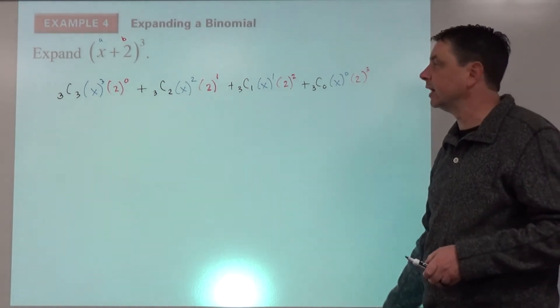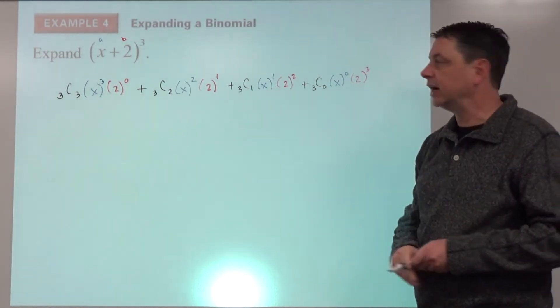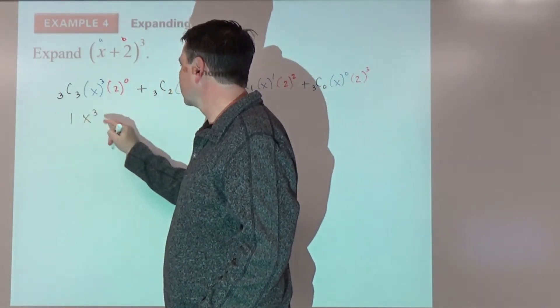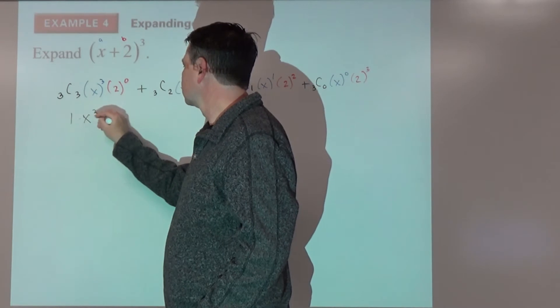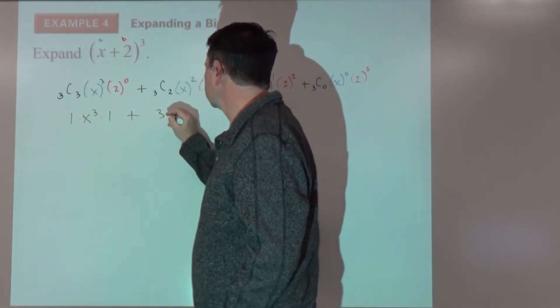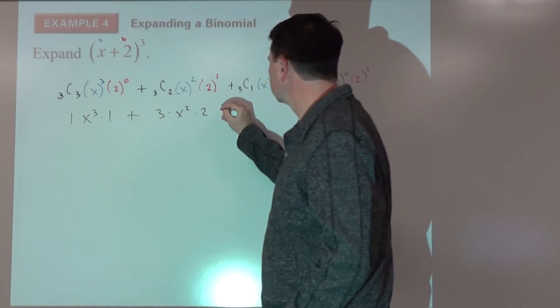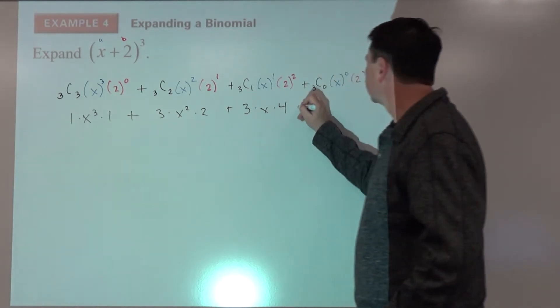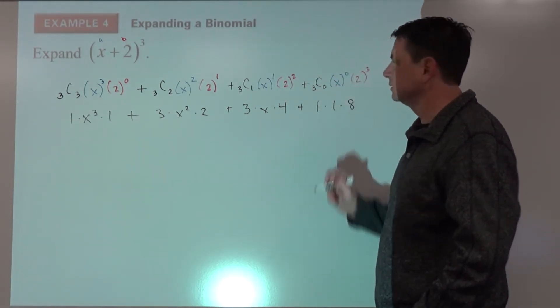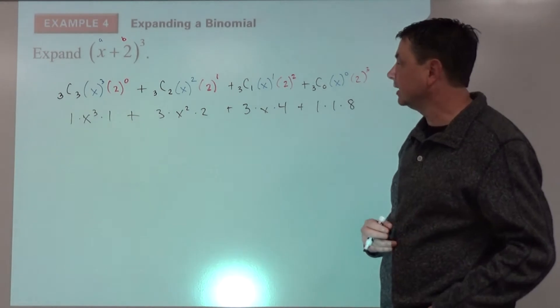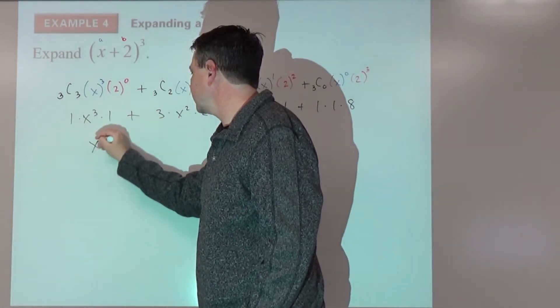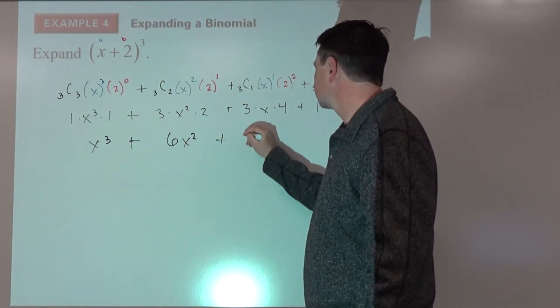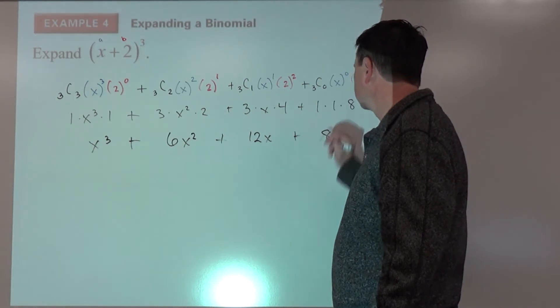And now we just simplify. So by calculator or whatever, 3 choose 3 is 1, times x cubed times 1, plus 3 times x squared times 2, plus 3 times x times 4, plus 1 times 1 times 8. So final answer, if we simplify one more time: x to the third plus 6x squared plus 12x plus 8.